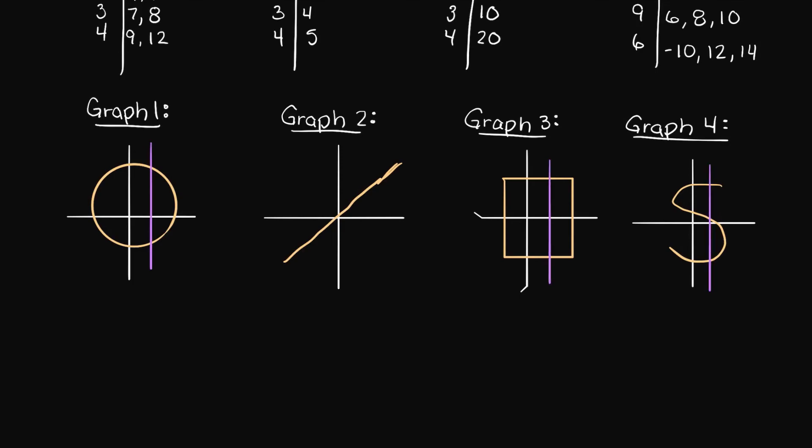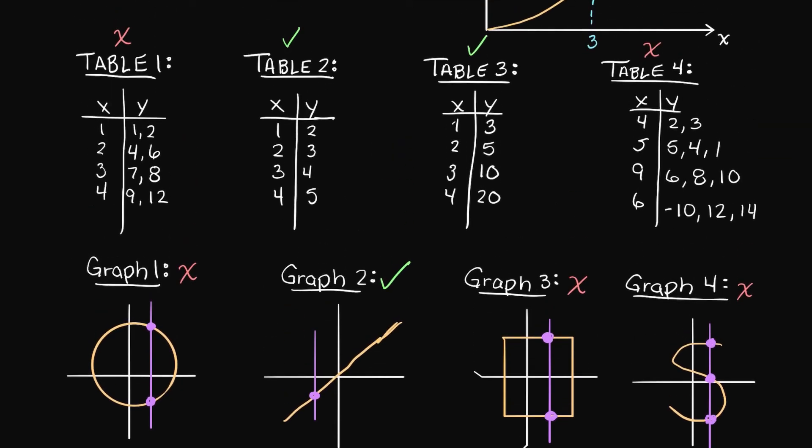Therefore, since graphs 1, 3, and 4 all hit our vertical line multiple times for some given input, it is clear that only graph 2 is a function, the rest are not.